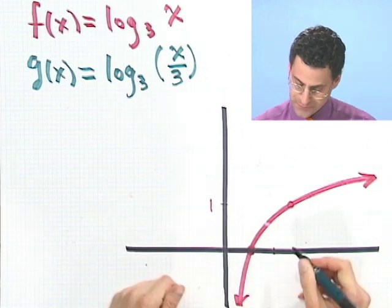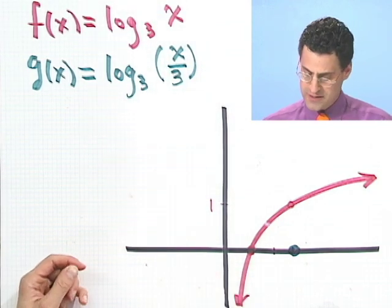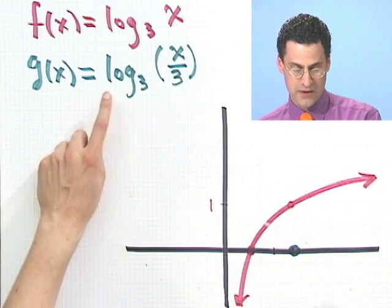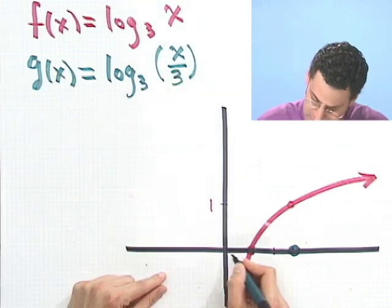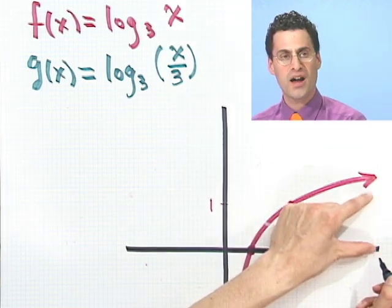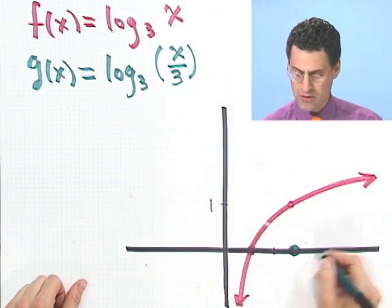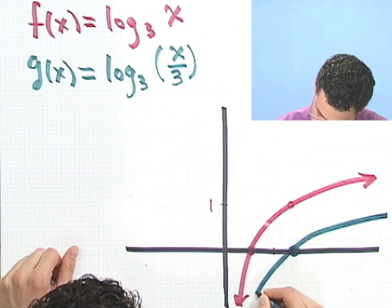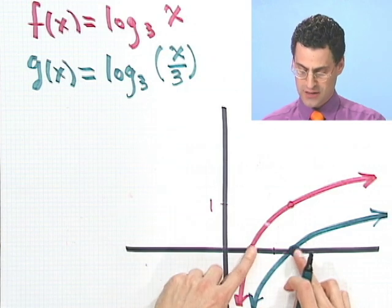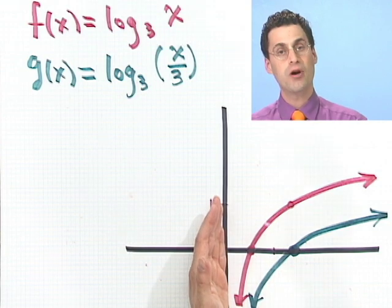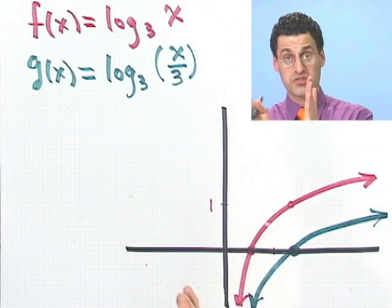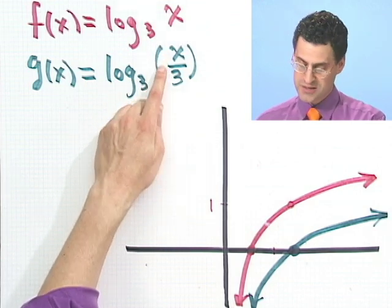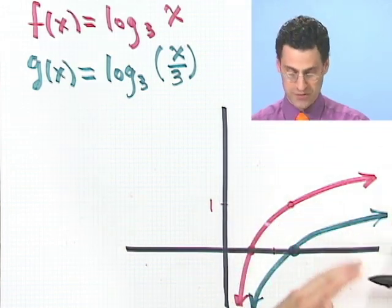When I put a 3 in here, I'll see 3 over 3, which is 1. And 3 to what power will give me 1? 0. So now over at 3, this point is going to be over here now. And what happens to the other points? What about 9? 9 over 3 is going to give me a 3 here. And what power do I have to raise 3 to in order to get 3? 1. So now I've got to go all the way over to 9 just to get to a height of 1. So this is a very slow-growing function. When you multiply the x by a number smaller than 1, in this case 1 third, the thing moves and tones down a little bit.